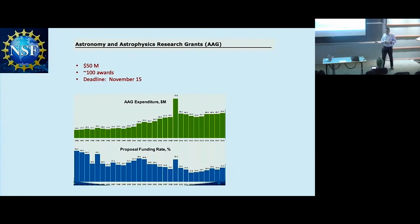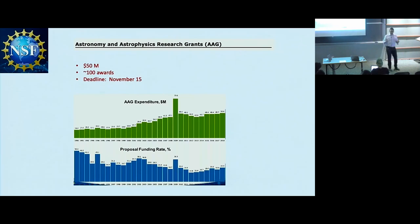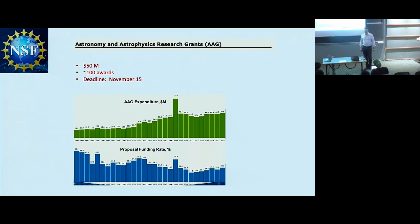The recent decadal survey said the number one priority is to protect the grants program, so we're now putting a firewall around it. That puts pressure on other parts of the division — our instrument funding. We're trying to push that pressure upward so it goes outside our division into the whole NSF. Success rates are about one in five — that's really competitive. If you've ever served on a panel, you know that at least half the proposals are really good and deserve funding. The worst part of the job is having to say no to a lot of really good things.